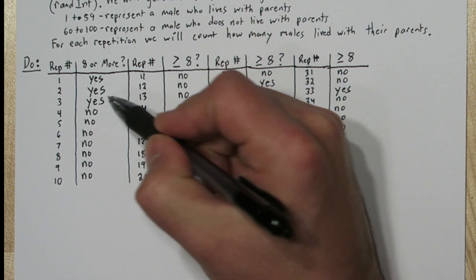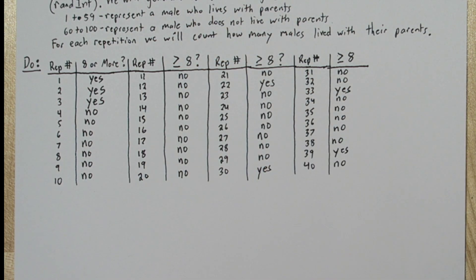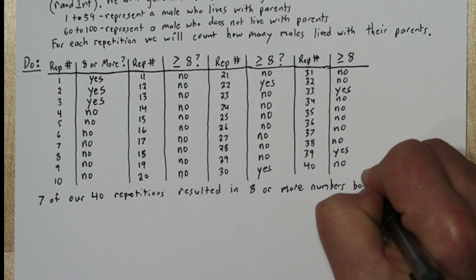Our first 3, 1, 2, 3, and we had 1 here 4, 5, 6, 7. So 7 of our 40 repetitions resulted in 8 or more numbers between 1 and 59.